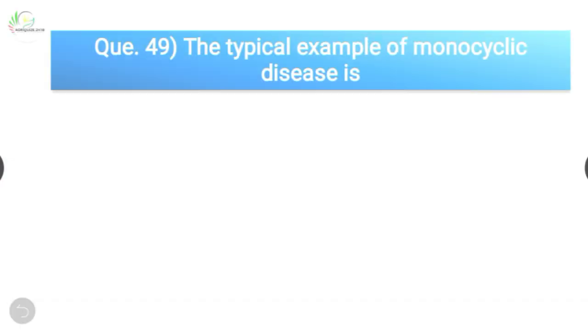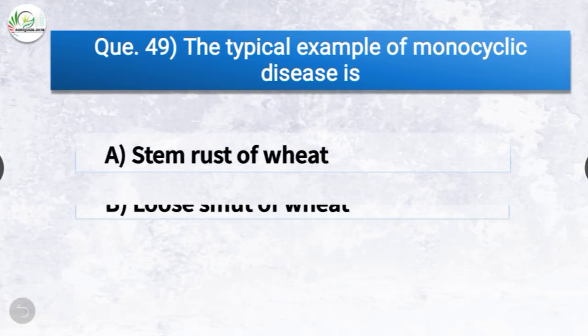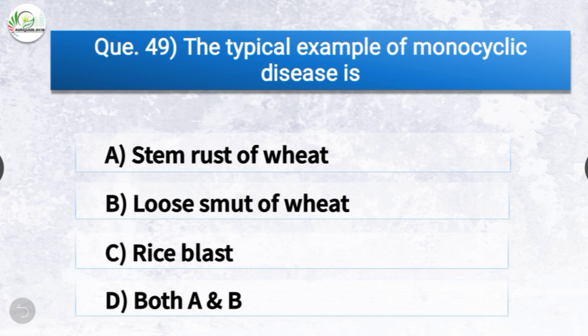Question number forty-nine: The typical example of monocyclic disease is dash. The options are stem rust of wheat, loose smut of wheat, rice blast, or both A and B. The correct answer is option B, loose smut of wheat. Pathogens that produce only one cycle of development per crop cycle are called monocyclic, while pathogens that produce more than one infection cycle per crop cycle are called polycyclic.